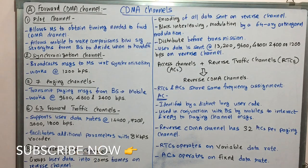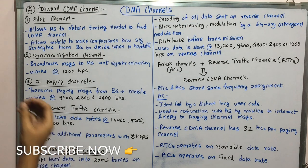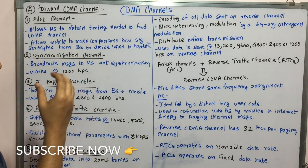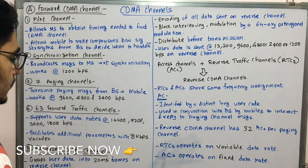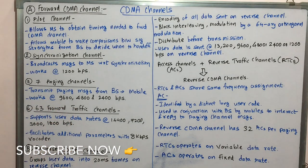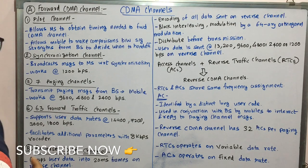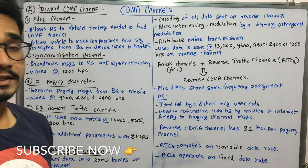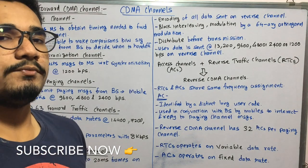Next we have forward traffic channels, which are 63 in number. They support user data rates at speeds of 14400, 7200, 3600, and 1800 bits per second. These forward traffic channels are mainly used to facilitate additional parameters with an 8 kbps vocoder, providing additional parameters for supporting training data or flag data for any future activities.